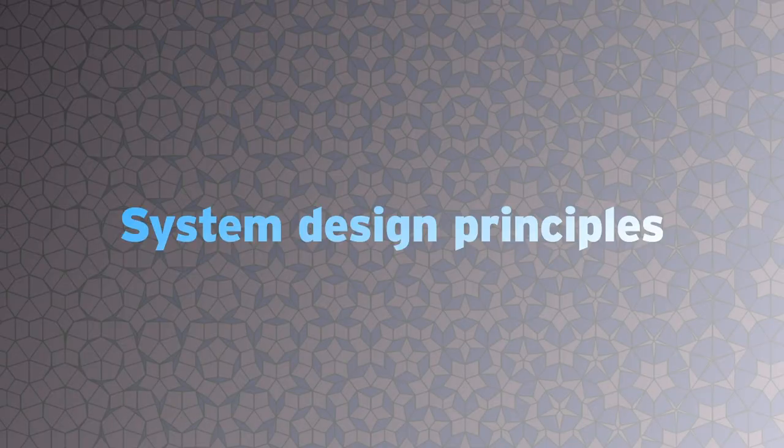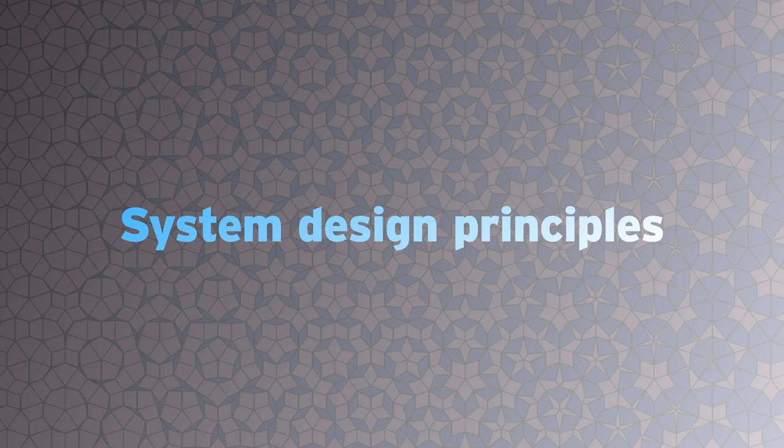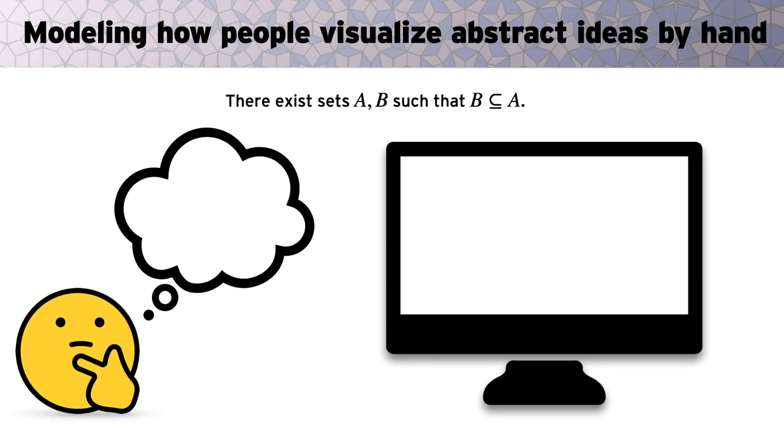Now, I'll take a walk through how our system was designed from the ground up to reflect the natural process of making diagrams from abstract logical ideas. I'll show how this results in a system that naturally meets those design goals that we set out earlier. The key insight is to look at how people make diagrams by hand, and encode that process formally in the system. For example, consider the statement, there exists sets A and B such that B is a subset of A.